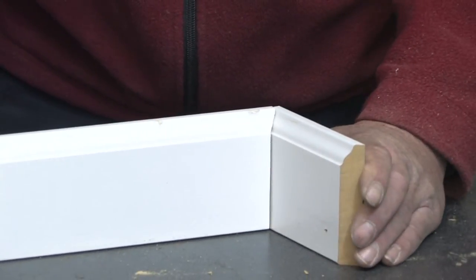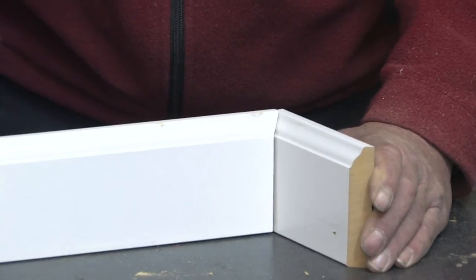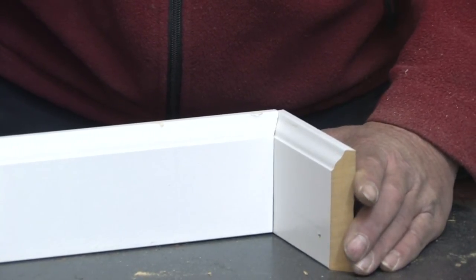As you can see, it makes a real tight, easy joint, regardless whether you have to open or close the angles in the corner. That's how you cope inside molding.